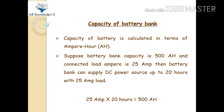Next, what is the capacity of the battery bank and its unit? The capacity of a battery bank is calculated in terms of ampere hours. The ampere hour is the unit of a battery. Now, how is the ampere hour calculated? Suppose the battery bank capacity is 500 ampere hours and the connected load is 25 amperes.